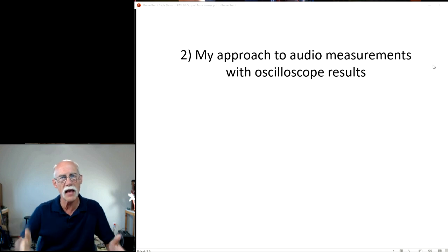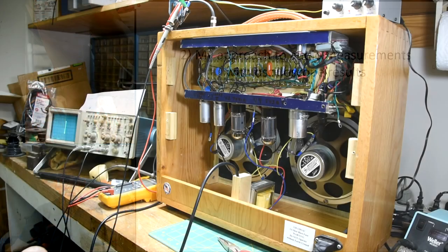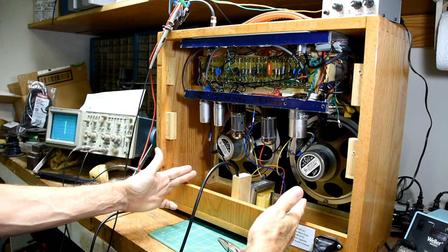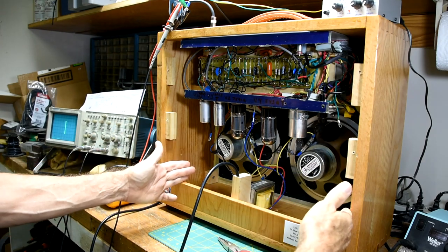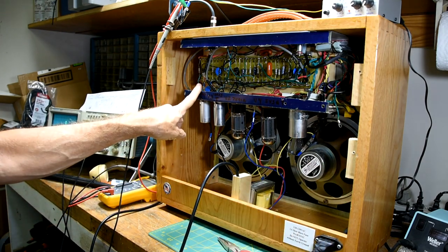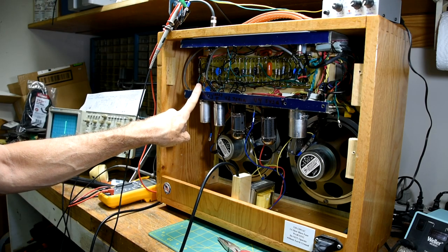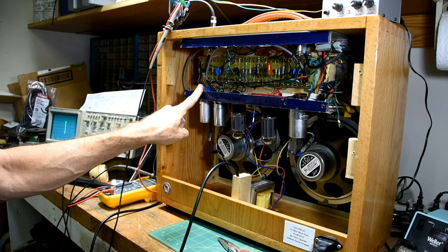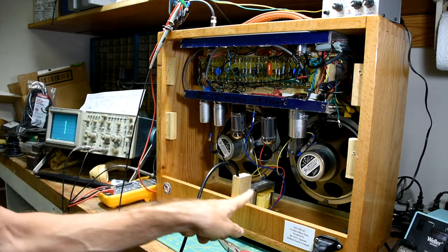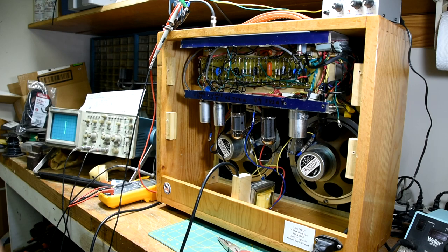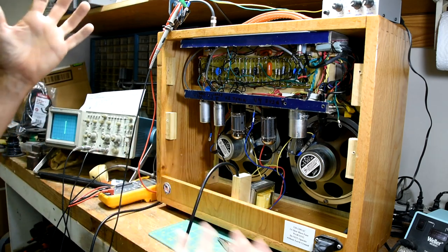Let me go into my approach to audio measurements with oscilloscope results. This is the test setup I used to determine for a single-ended tube amp, such as my Premier 28. What size output transformer do you have? What size frame? And what is the difference between the 10-watt frame that I have installed, the 20-watt frame that's under test, and any other frame? I'm going to show you the difference.